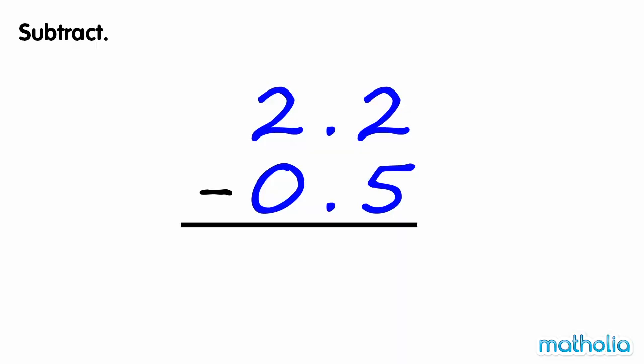Subtract. Find 2.2 minus 0.5. Start by subtracting the tenths. We cannot subtract 5 tenths from 2 tenths, so we regroup 1 one into 10 tenths. We now have 12 tenths. 12 tenths minus 5 tenths equals 7 tenths.